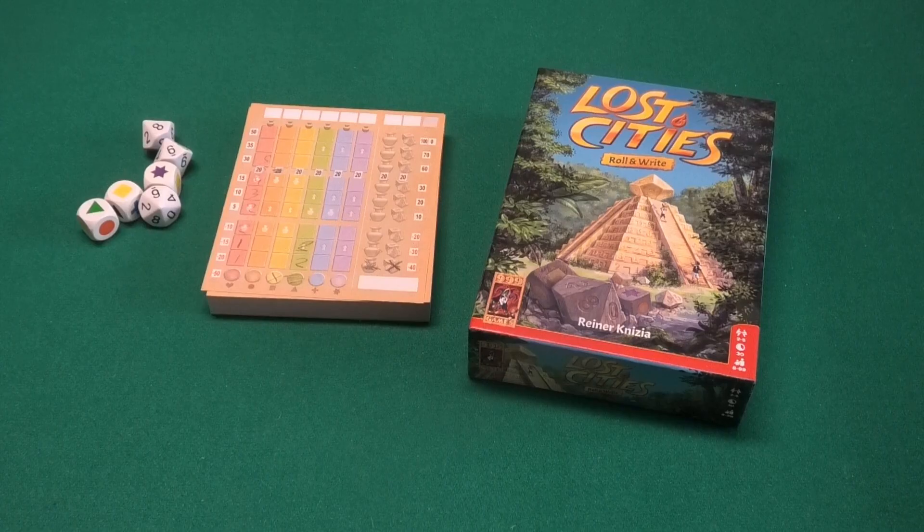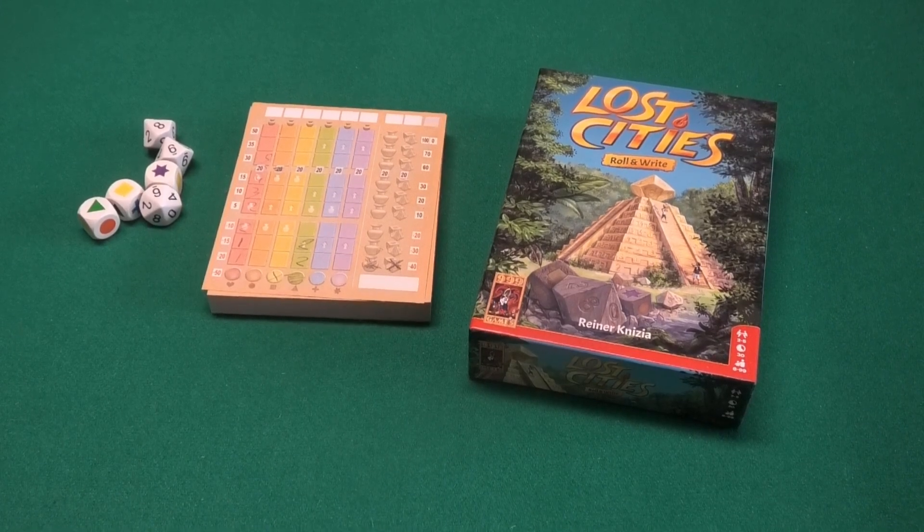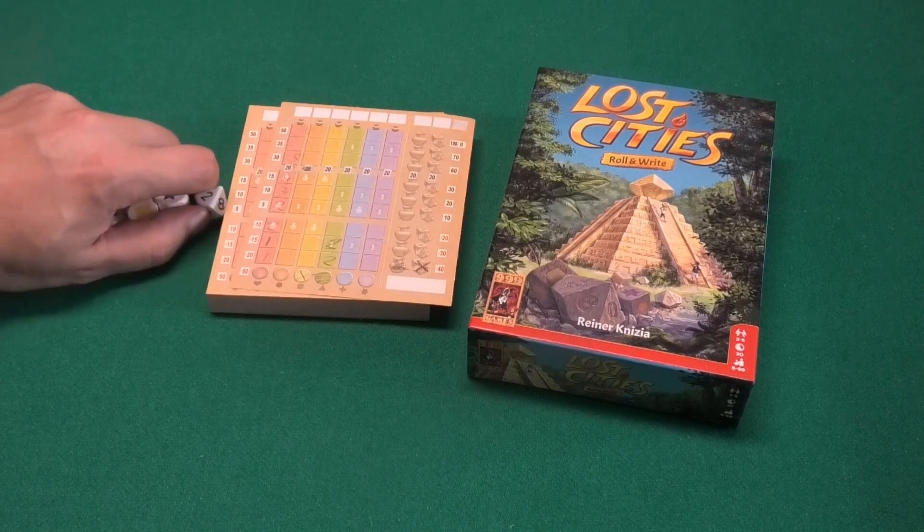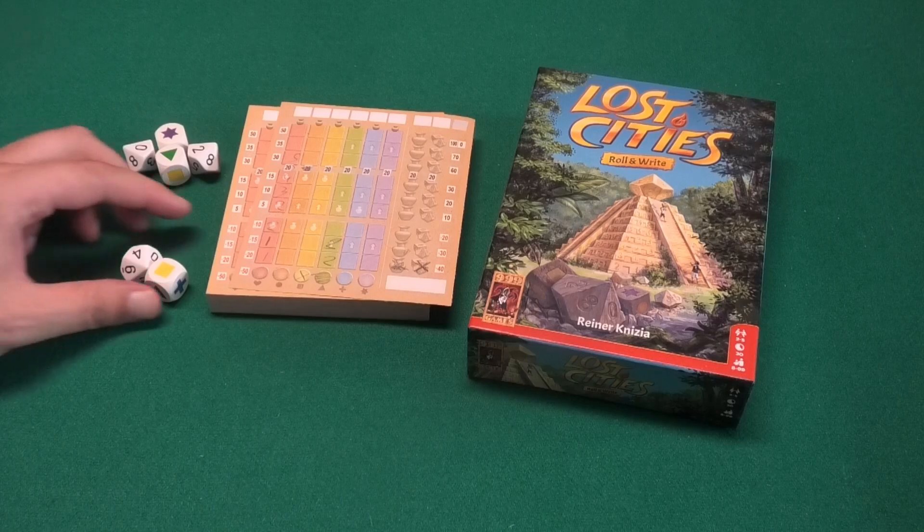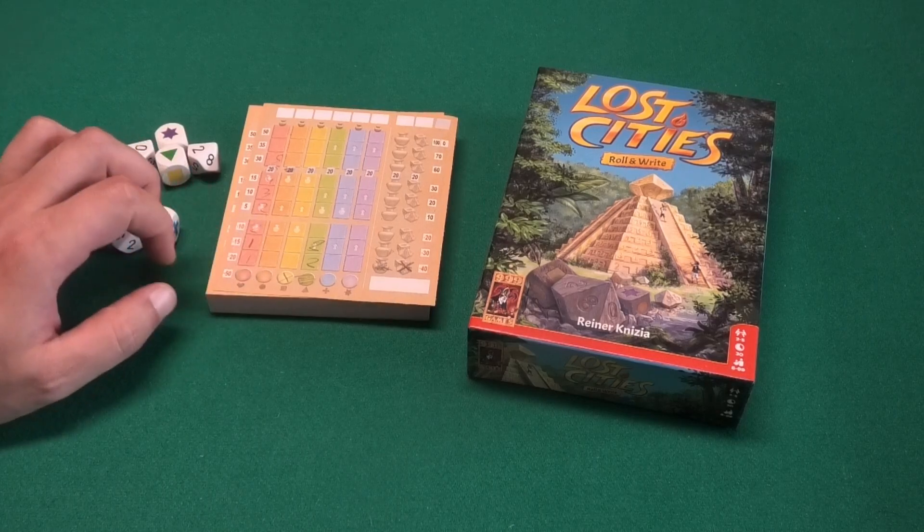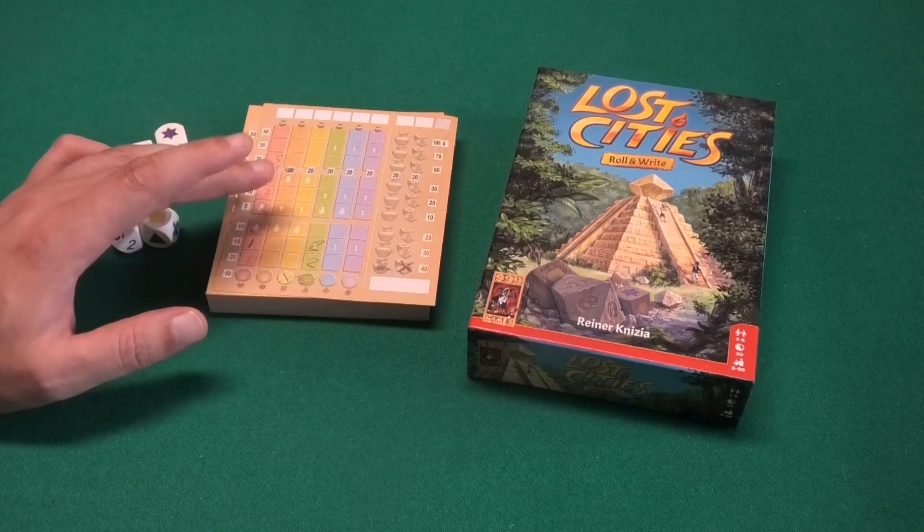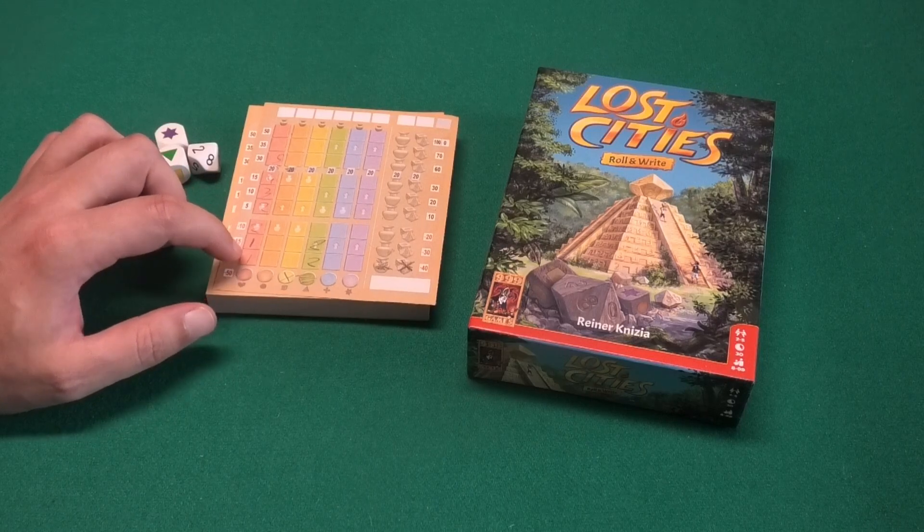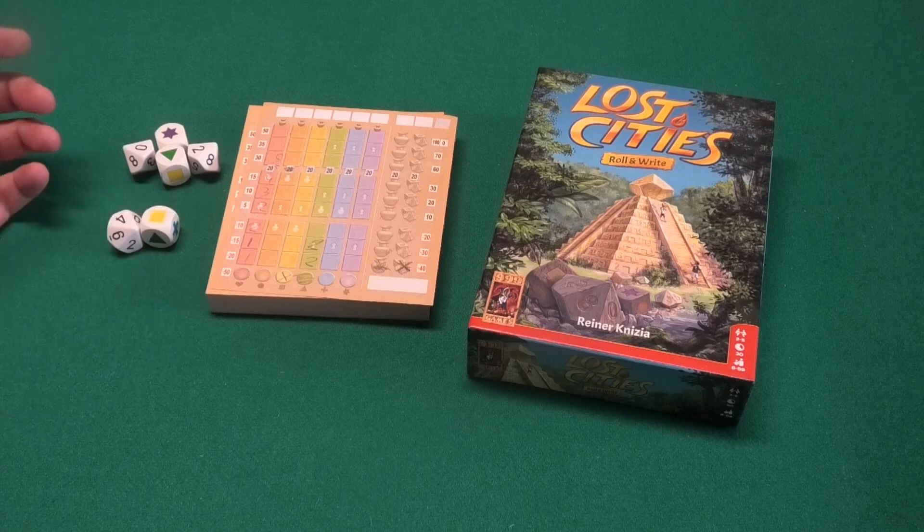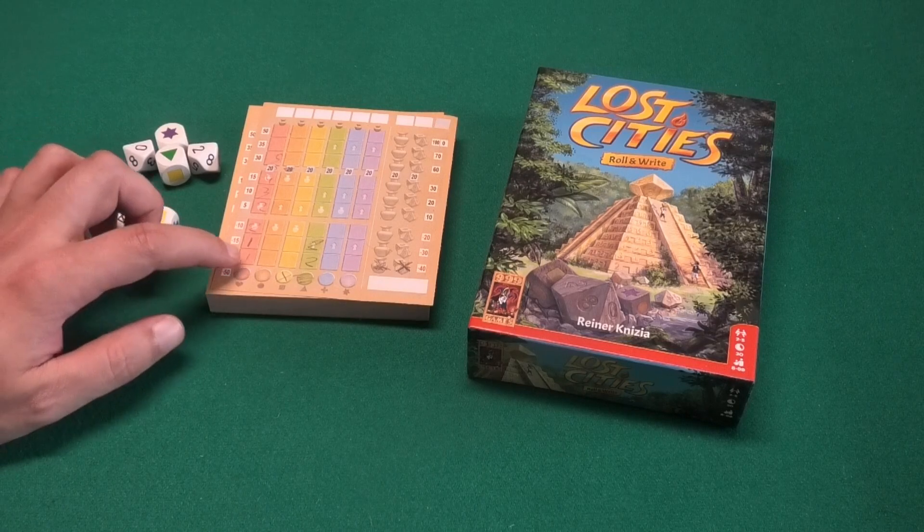And that's it. That's all for Lost Cities Roll and Write, pretty straightforward. One player will roll the die and pick one selection. The other dice are left for the other players to pick from. And just like in Lost Cities, you will try to work your way up with every expedition, going from the lowest possible number, number one, up to the highest number. And just like in Lost Cities, you will try to work your way up on the expeditions. When you start them, they will be worth negative points, but the farther you get, the more points they will be worth.